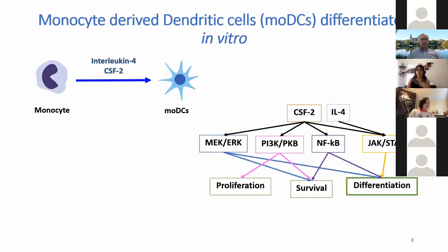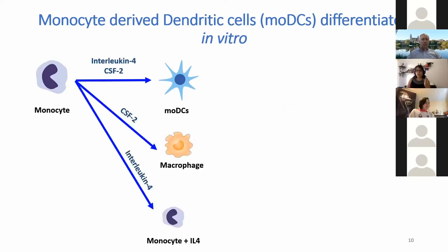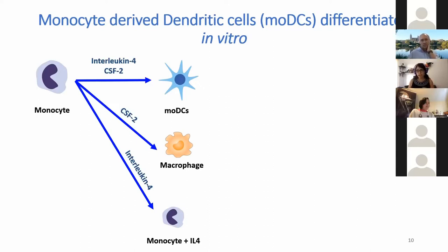These signaling cascades make cells proliferate, go into survival, and differentiate to produce dendritic cells. If the monocytes are treated only with CSF2, we get macrophages; treated only with IL-4, we get activated monocytes. Our general aim is to understand how this differentiation happens through a dynamic model to complete this regulatory network. Logical models are built by first taking information from the literature — only human data treated with CSF2 and IL-4 in the same timelines, requiring at least one article supporting any interaction.